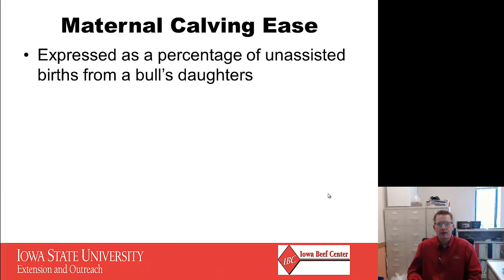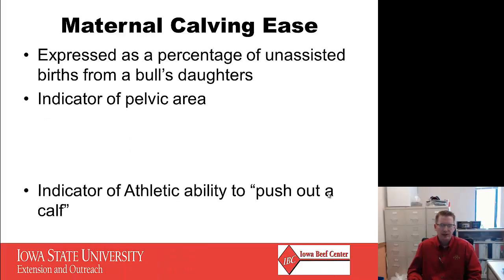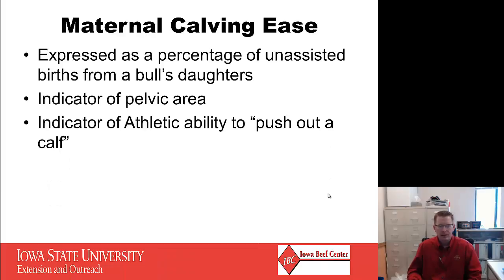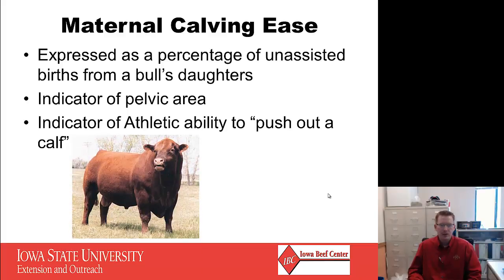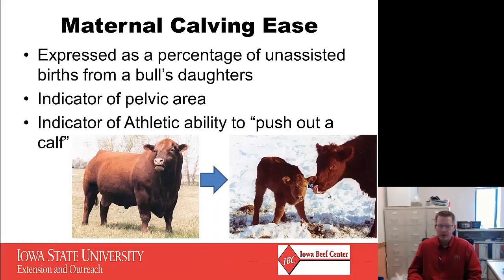Maternal calving ease was touched on in session one. It's expressed as a percentage of unassisted births from a bull's daughters. It is a good indicator of pelvic area, or the athletic ability of a cow to push a calf out on her own. Maternal calving ease is the measure of that sire's ability to have daughters that calve unassisted.